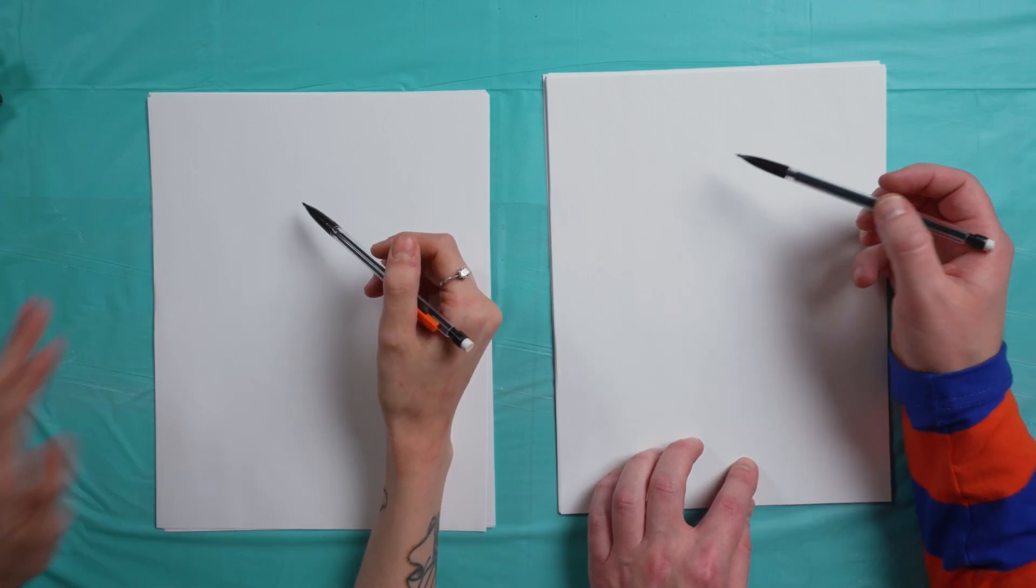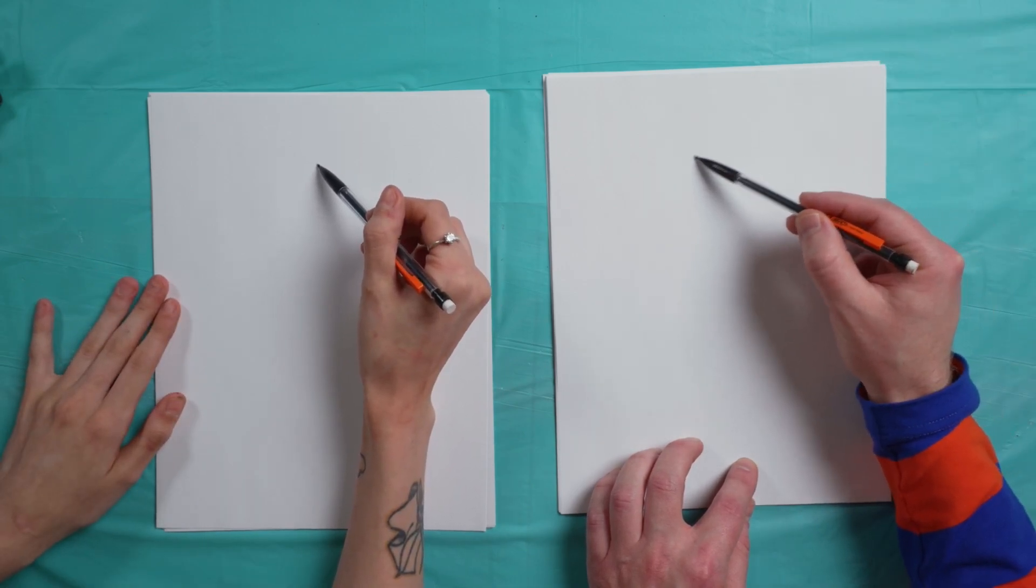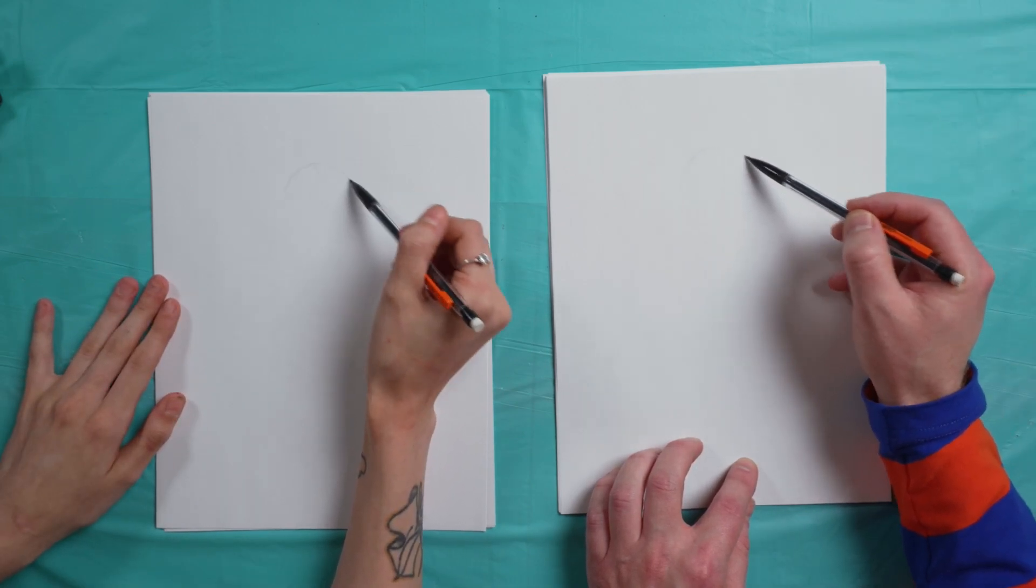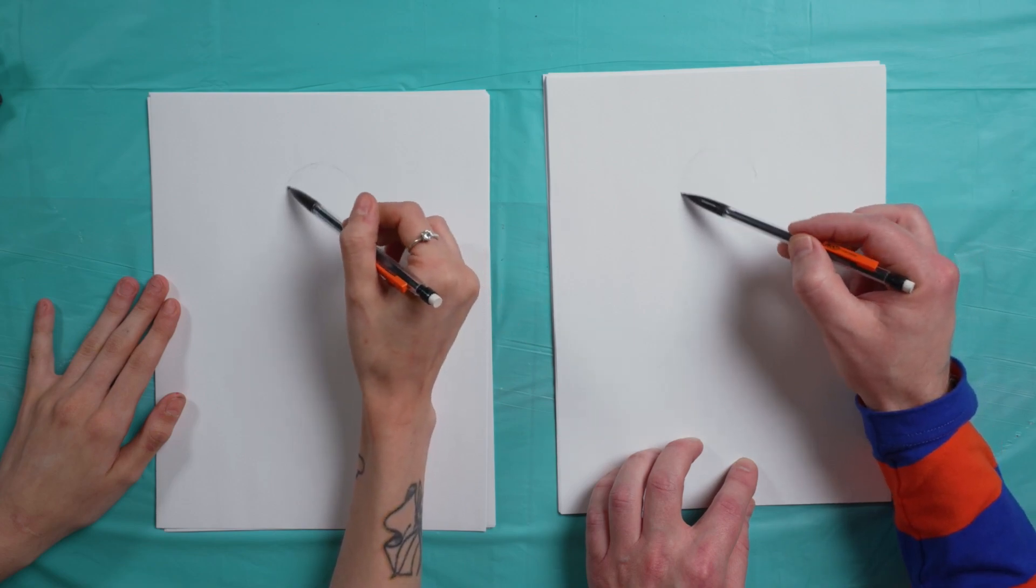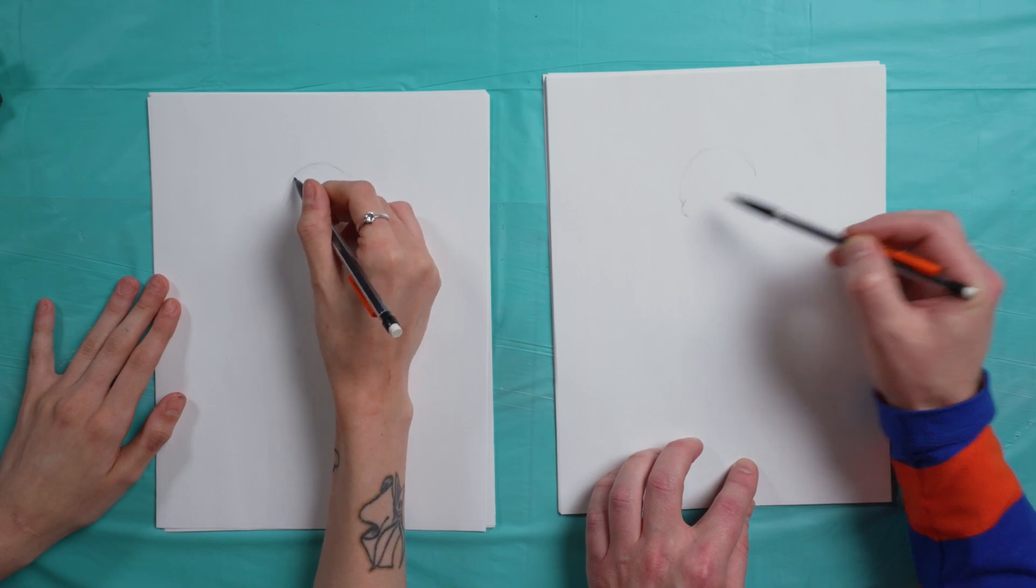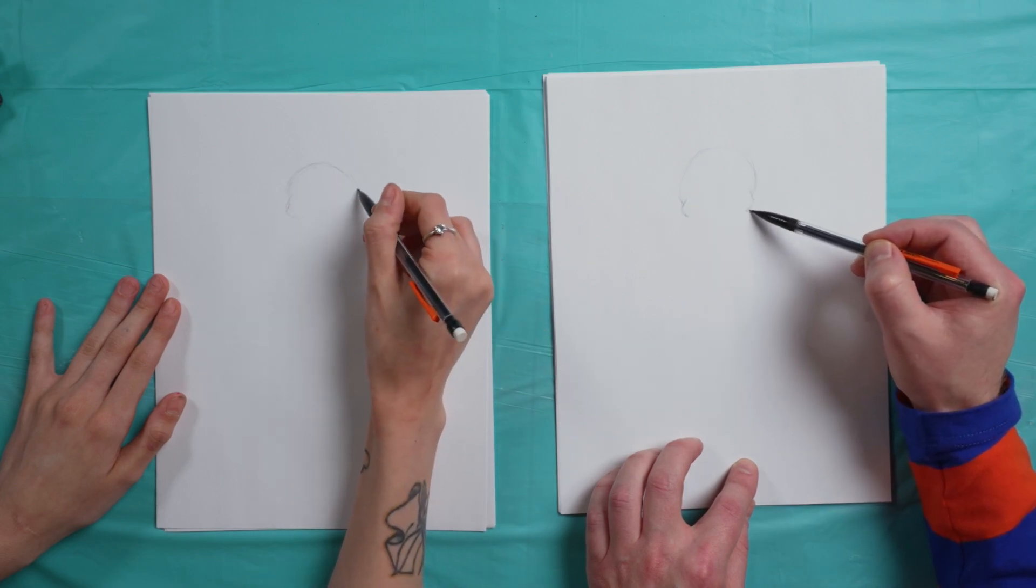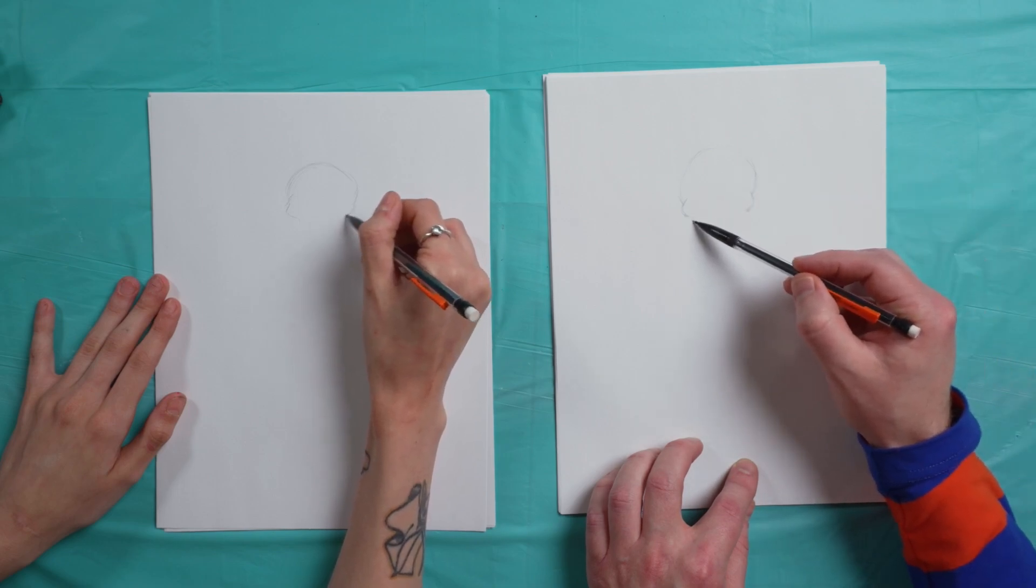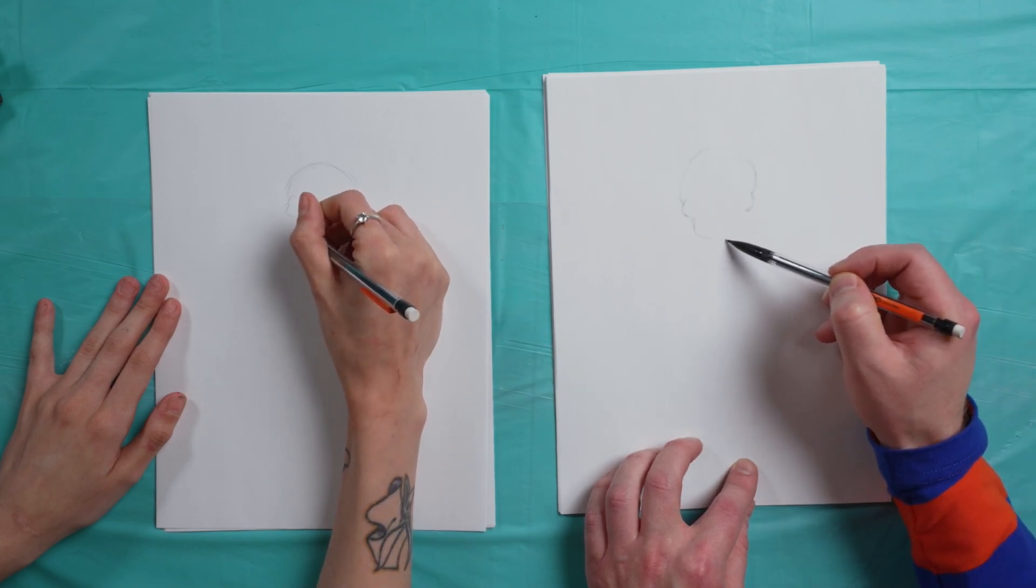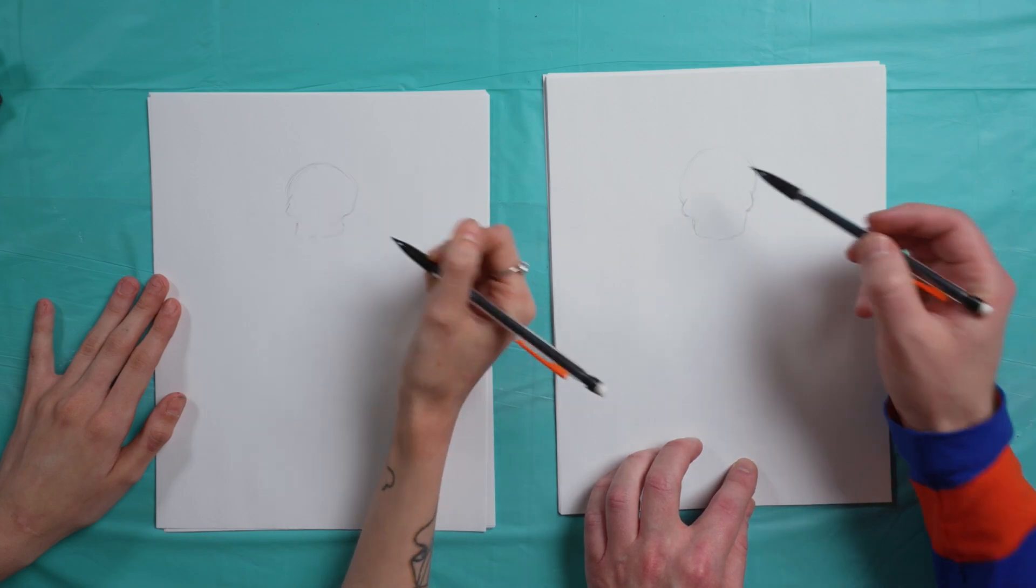So we're going to start with the head of our skeleton. We're going to start kind of up on the top of the page, and we'll do a rounded line for the top of the skull. We're going to do a little cheek right here, come on the other side and do the exact same thing over here, and then that jaw coming down. Perfect, good job.